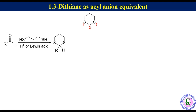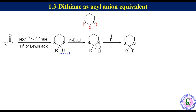The pKa of the hydrogen at C2 is 31. It can be abstracted by a strong base like n-butyllithium to produce a carbanion. The larger C-S bond length and greater polarizability of valence electrons of the sulfur make it more stable and more nucleophilic. This carbanion can react with a variety of electrophiles to produce substituted 1,3-dithiane, which after hydrolysis in the presence of mercuric ion regenerates aldehyde or ketone.